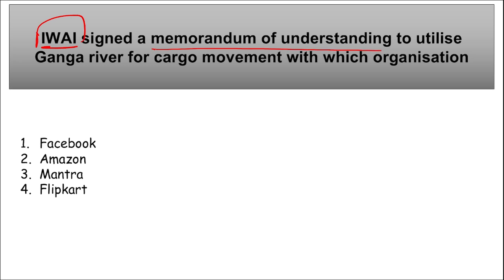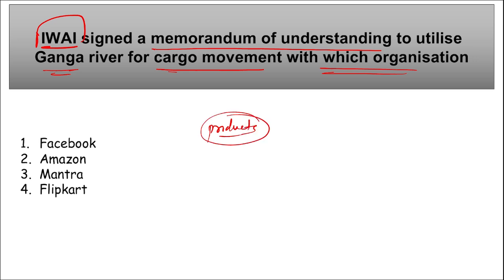IWAI — the Inland Waterways Authority of India — signed a memorandum of understanding with Amazon for cargo movement on the Ganga River. If a product is delivered via the Ganga River waterway, it will be cost-effective and time-efficient. The first e-commerce cargo flag-off under this agreement will be done from Kolkata, West Bengal.